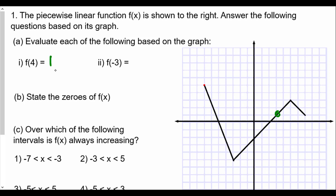So f(4) equals 1. Now what about f(-3)? We go to x = -3 on the graph, and the y value there looks like it's negative 5. So f(-3) equals -5. When you're asked these questions graphically, the number inside the parentheses is the x value, and what they're asking you to find is the matching y value on the graph.